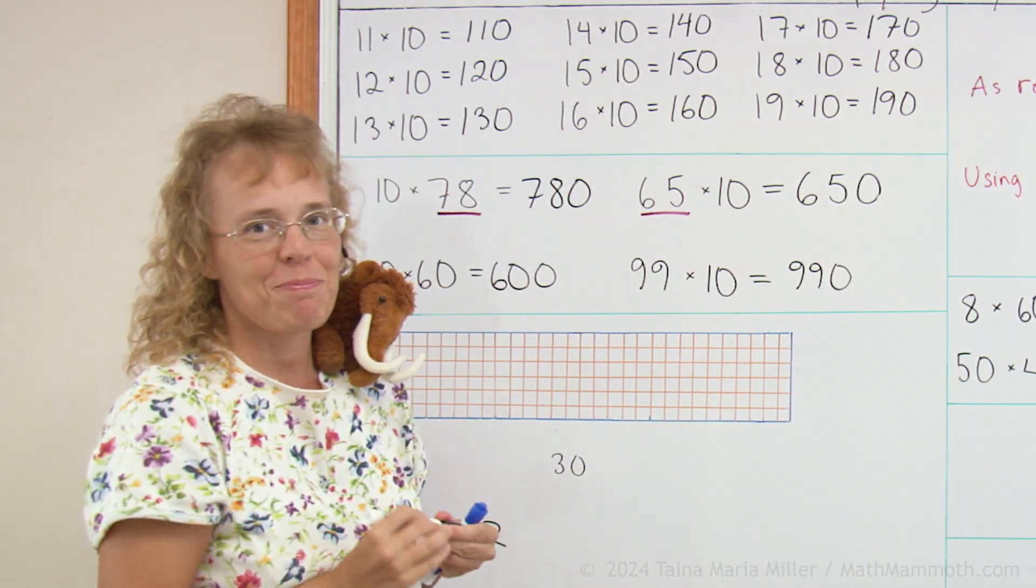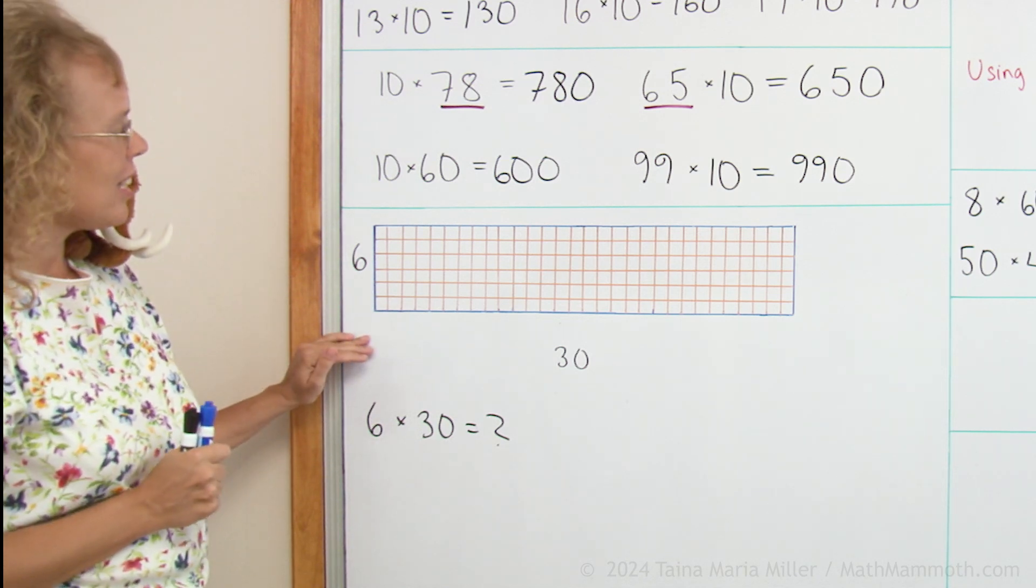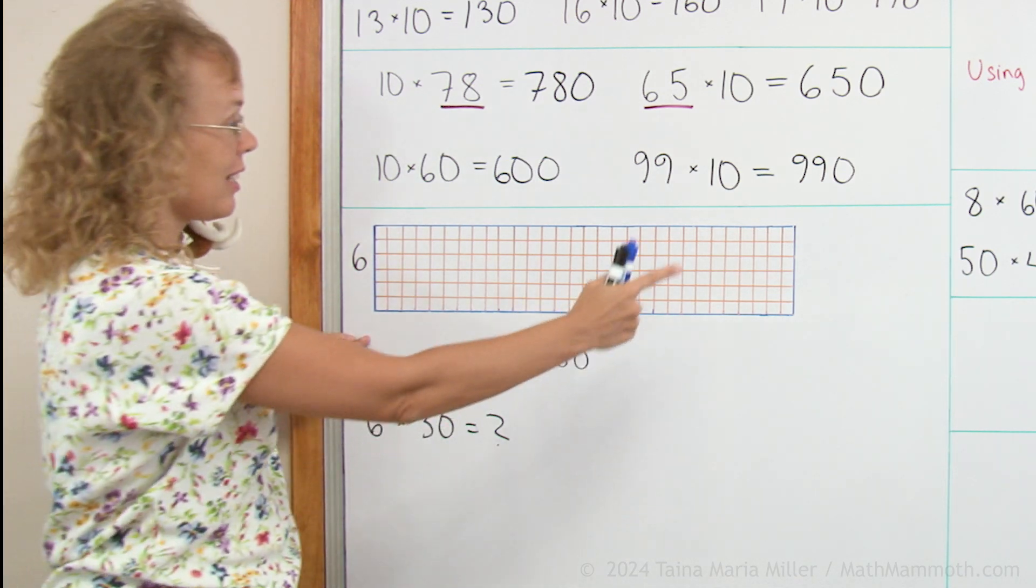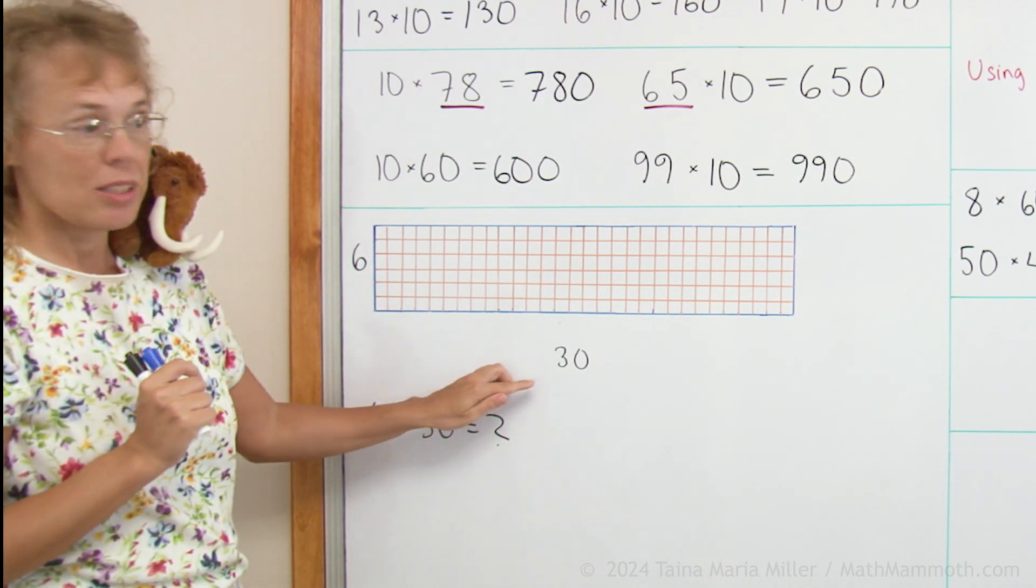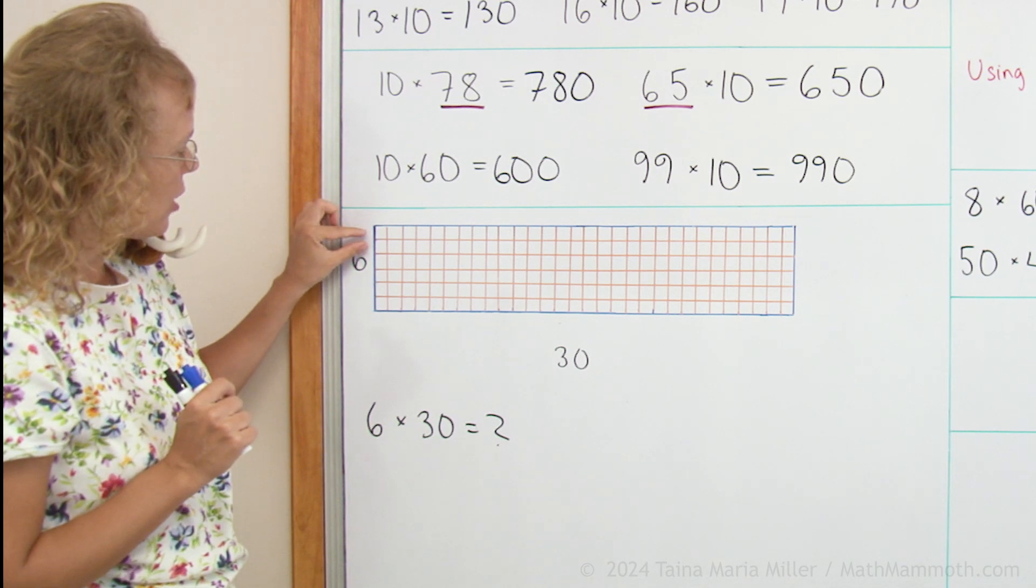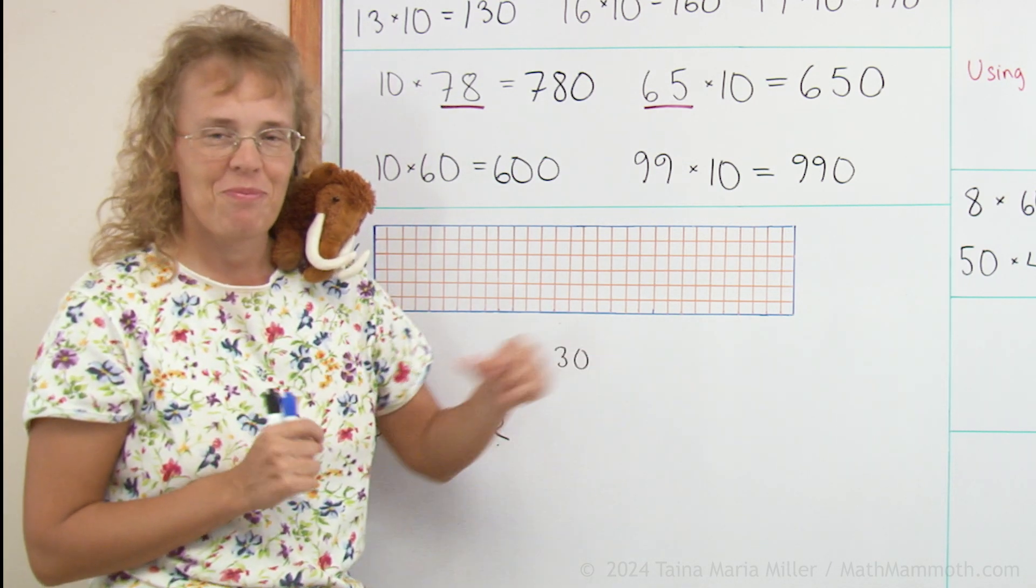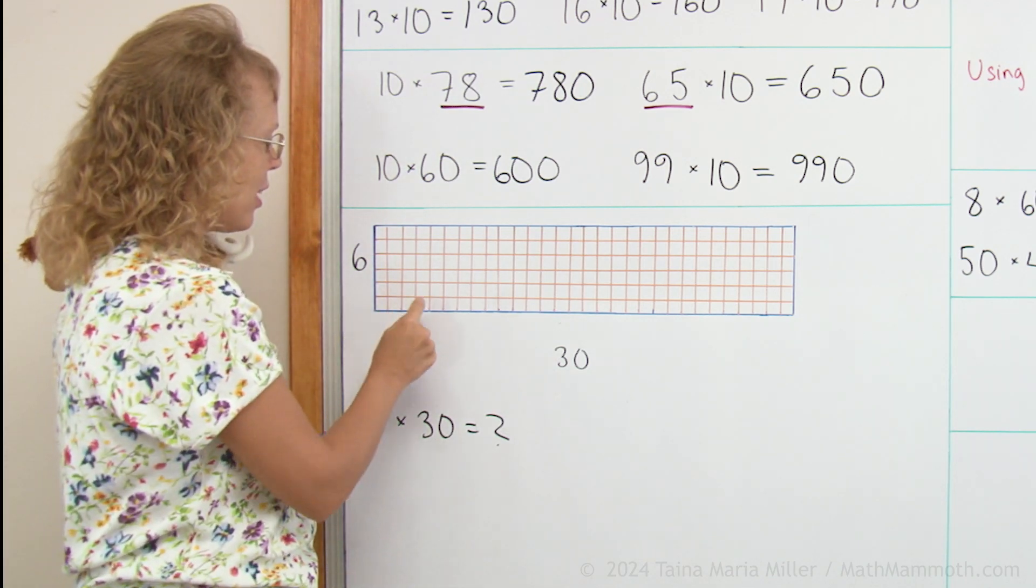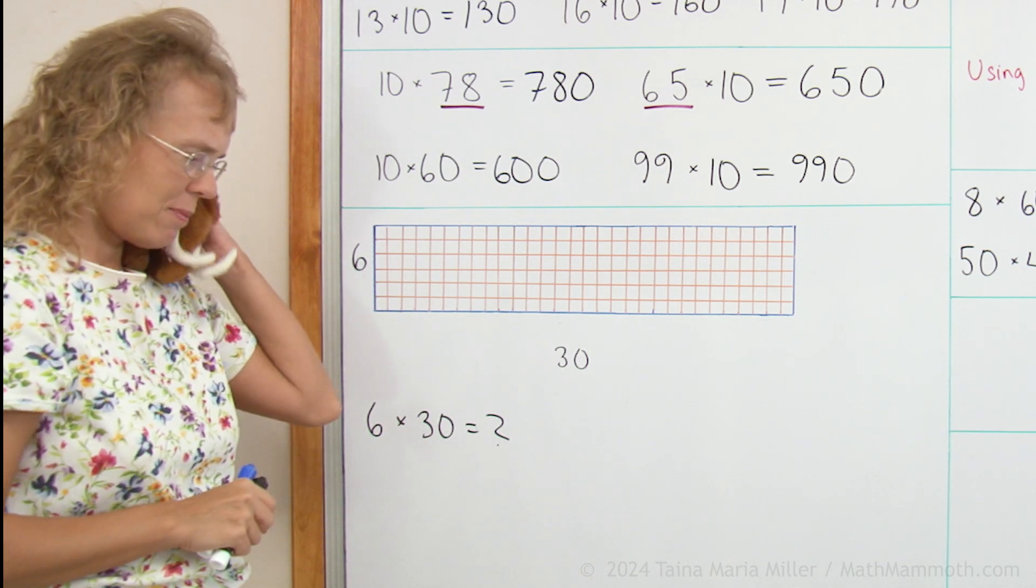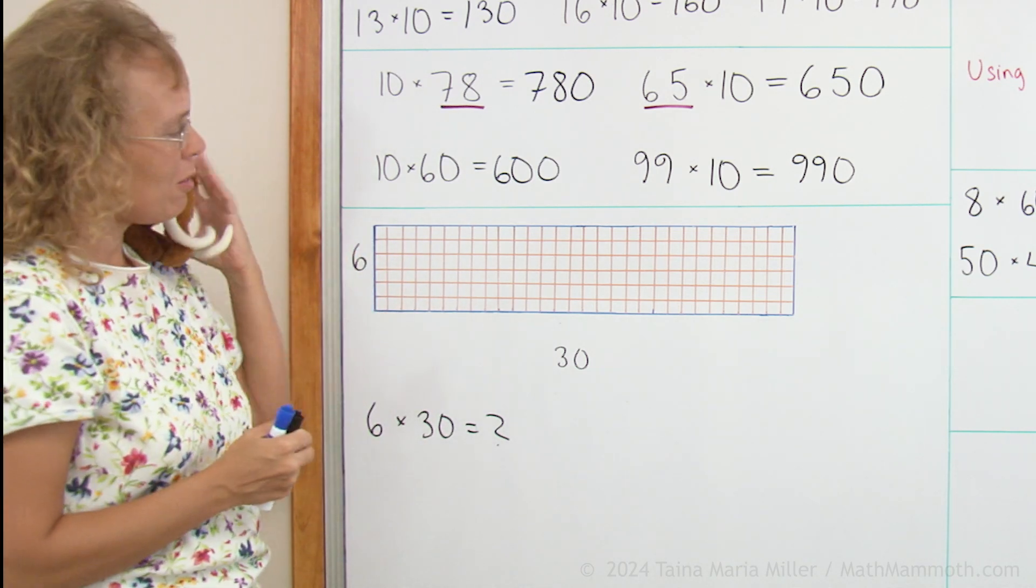Now over here we want to find out the area of this big rectangle. It means that we need to multiply 6 times 30. This side is 6 units long. This side is 30 units long. Of course, one way to do that would be to count all these squares. But what do you think, Matty? He's saying that would take too long. Right.